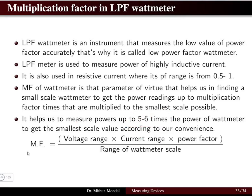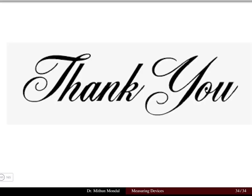The multiplication factor must first be obtained for the wattmeter, and then the pointer reading on the scale is multiplied to get the actual power reading. This completes the first unit of electric circuit analysis, covering measuring devices, Ohm's law, mesh and node analysis. From the second chapter onwards we go deeper into theorems. The first chapter is very important for understanding the fundamental concepts required for electric circuit analysis.